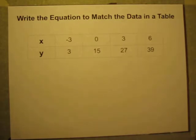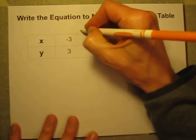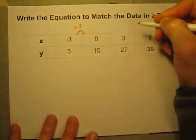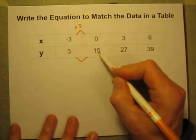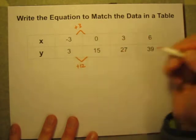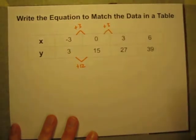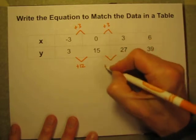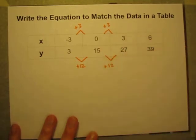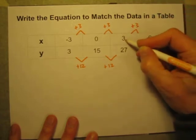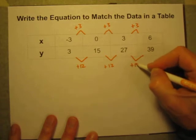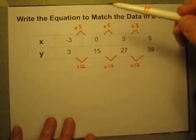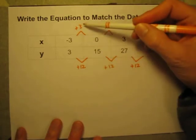And the first thing we should do is, this looks like it's going to be a linear relationship, but we should confirm first that the values in this table are changing at a constant rate. So let's see, when I increase the x, it looks like here the x's are increasing by 3. The y values increase from 3 to 15, which is an increase of 12. When I add another 3 x's, I get another 12 y's. 15 plus 12 is 27. When I add another 3 x's, 3 plus 3 is 6, I add another 12 y's. So all through this table, I've got this constant pattern of 12 y's for every 3 x's.